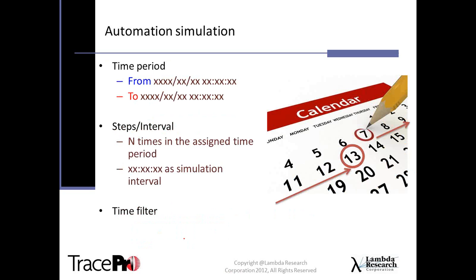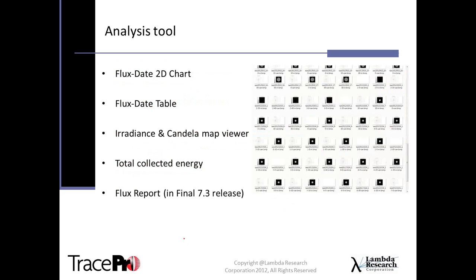If you want to specify an exact from-to time period, that's very easy to do. You specify the steps and the interval times for that particular from-to period, and there is also a time filter to specify exactly from-to times. When the analysis is complete, all files are put into a subdirectory you specify for later viewing. Analysis tools include a 2D chart, flux date table, radiance and candela map viewer, total collected energy, and — in the final 7.3 release — flux reports.